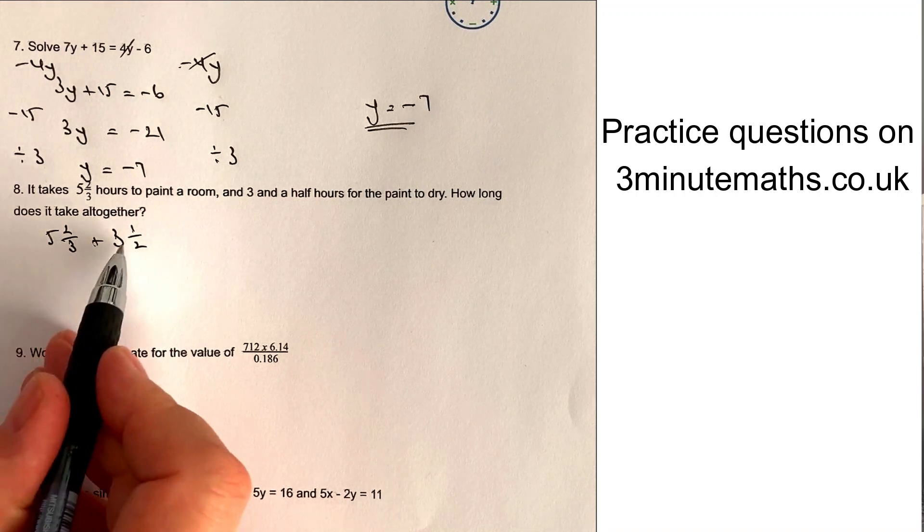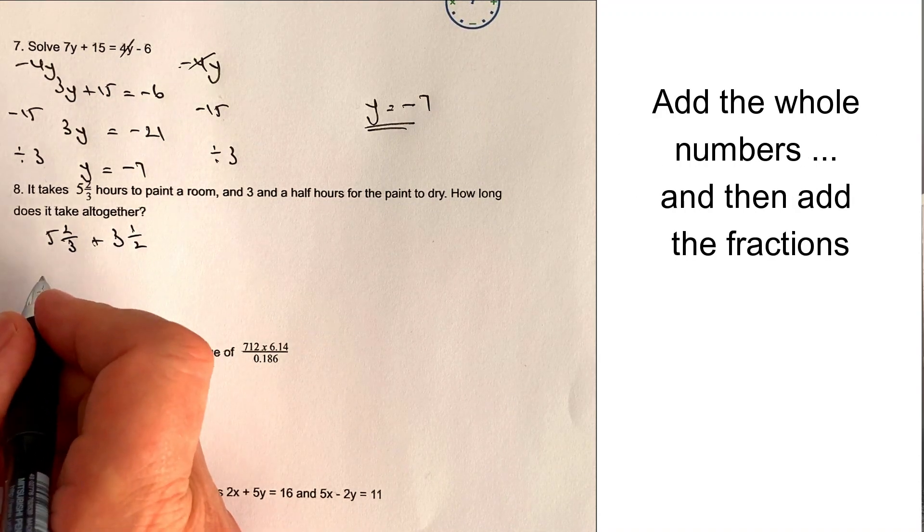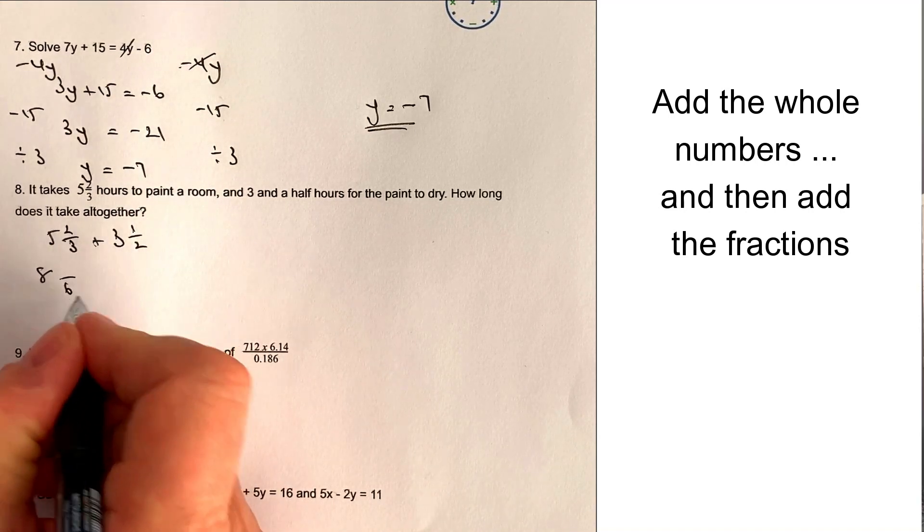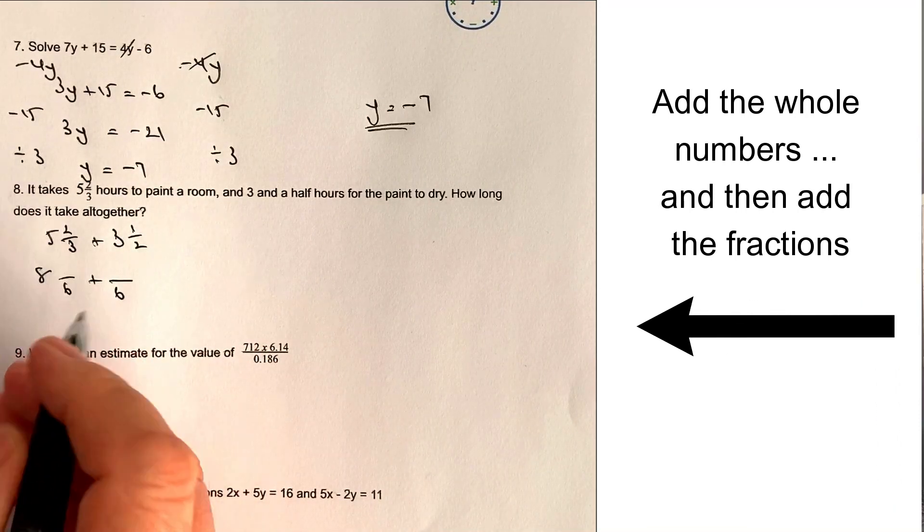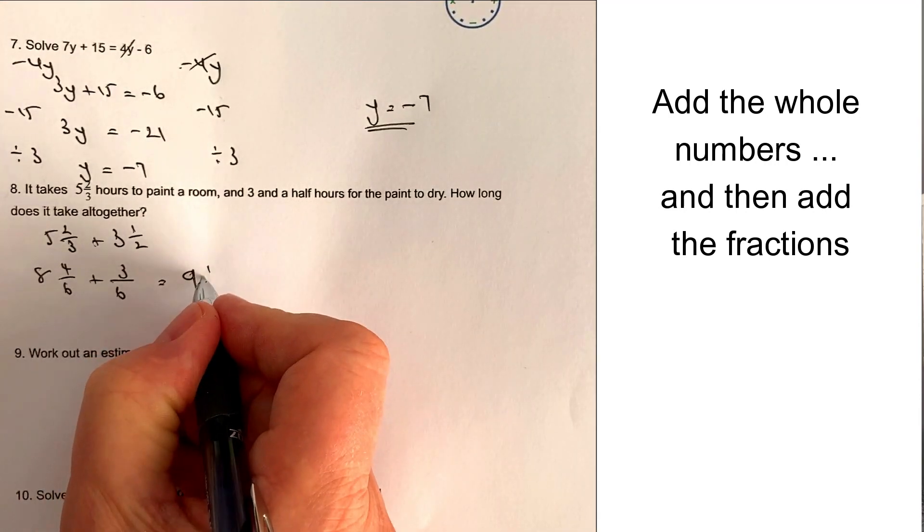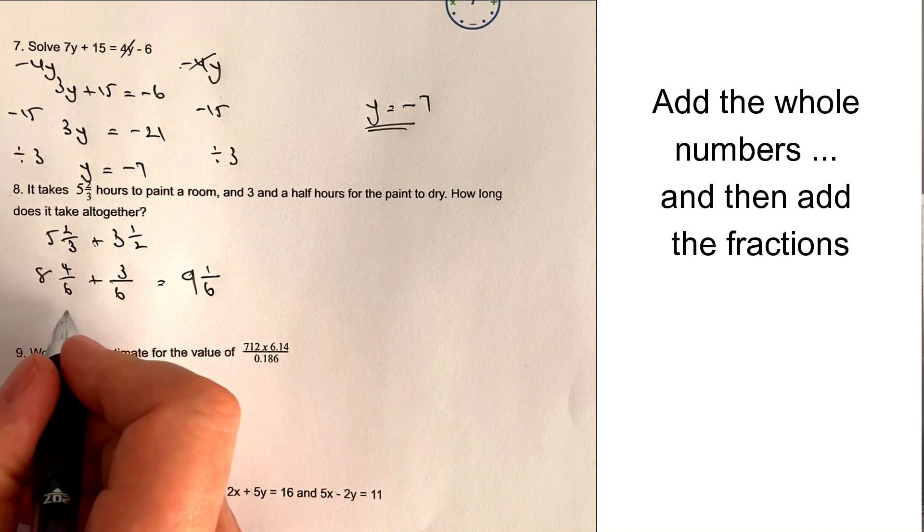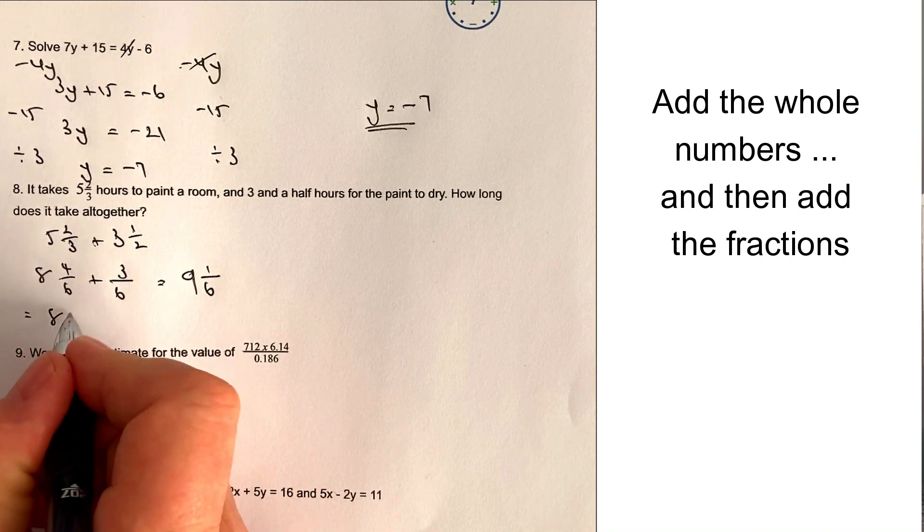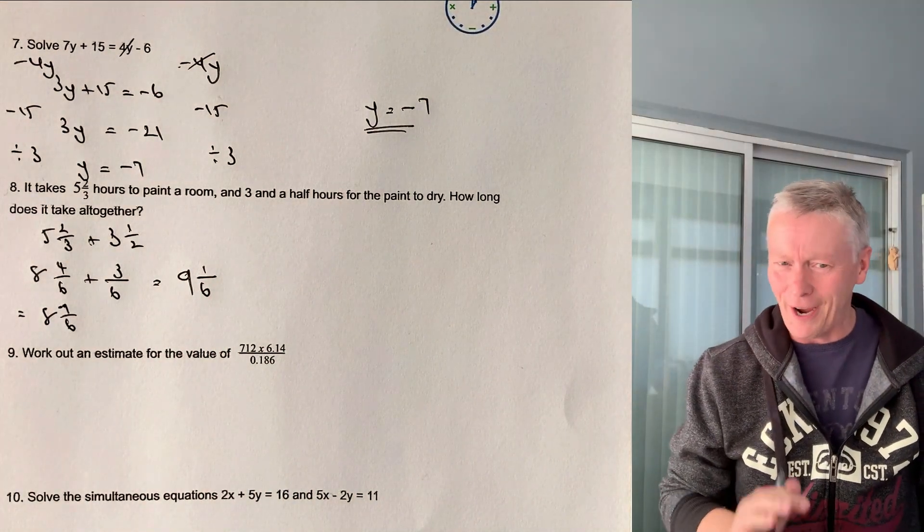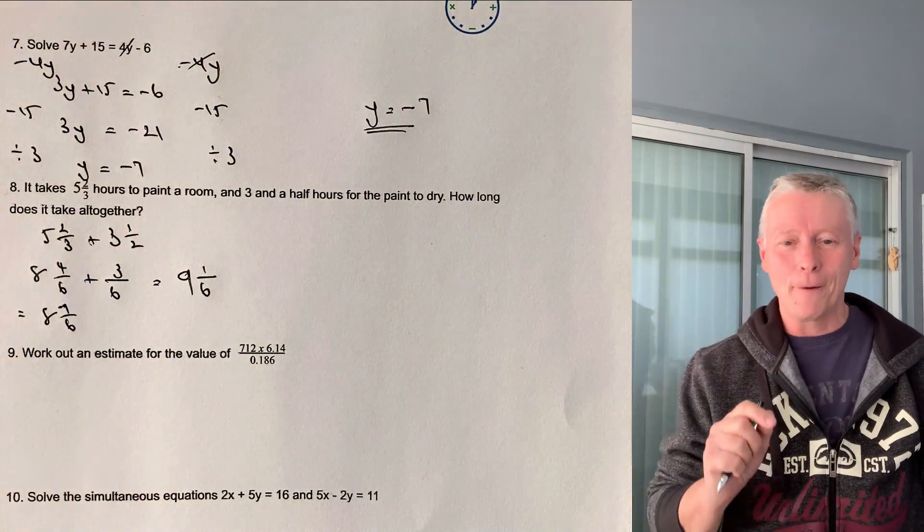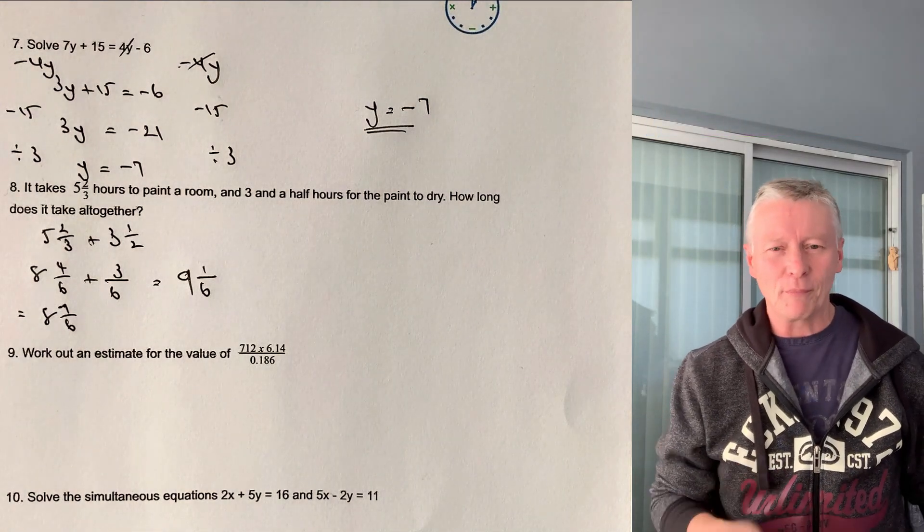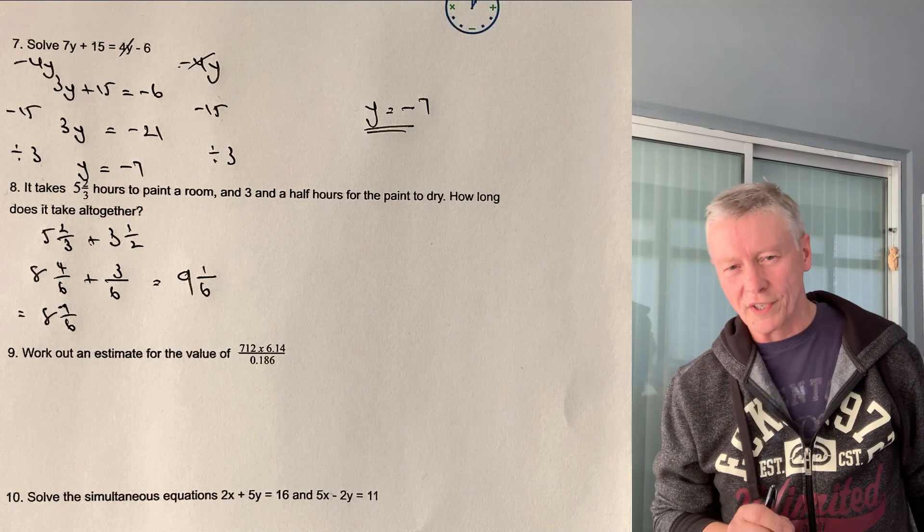So let's have a look at this one. It takes five and two thirds of an hour to paint a room and three and a half hours for the paint to dry. So we just basically need to add those fractions together. Five and two thirds plus three and a half. The easiest way of dealing with this is to add the whole numbers together. So I'm going to get eight. And then basically we need to convert this two thirds and convert this half to having the same denominator. So two thirds is the same as four over six, half is the same as three over six. That's actually going to give you nine and one six. Or if you prefer, this bit of it will give you eight and seven six, which I can then convert over to nine and one six. I hope you're OK with me on that one. If you do put a comment below, I do need to shoot some videos on fractions, so it might prompt me a little bit.